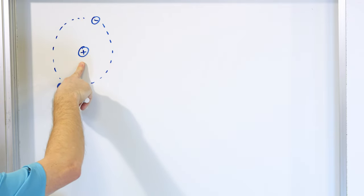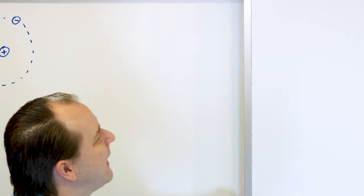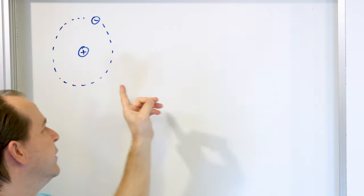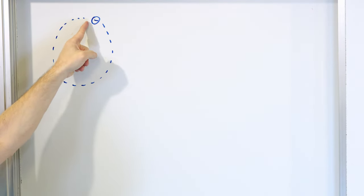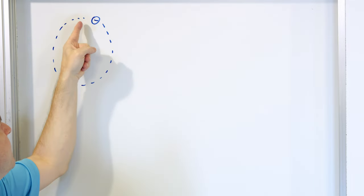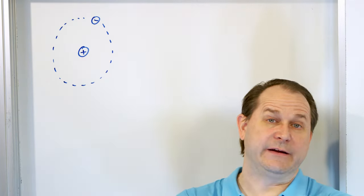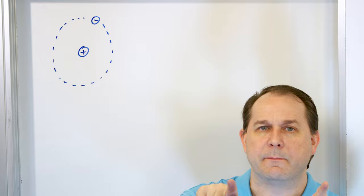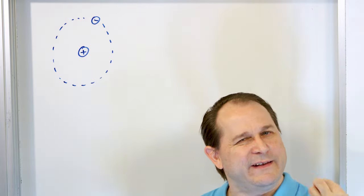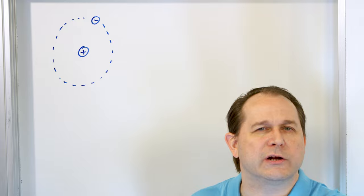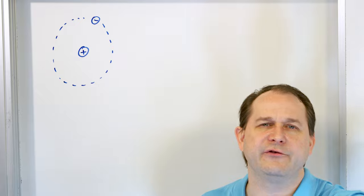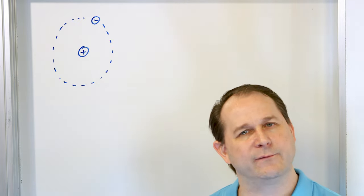We have one proton in the nucleus, and because of that, this is the hydrogen atom. There's one proton and one electron. Notice you have a negative charge and a positive charge — plus one and minus one. If you look at this atom from a distance, plus one and minus one add up algebraically to zero. So from a distance, the atom looks neutral. It doesn't have any net charge because you have equal and opposite charges — positive one and negative one.